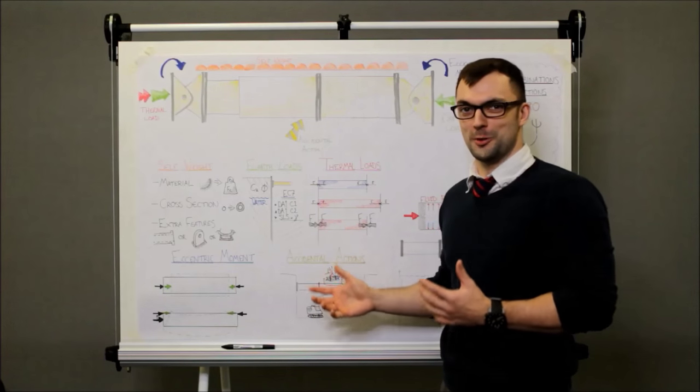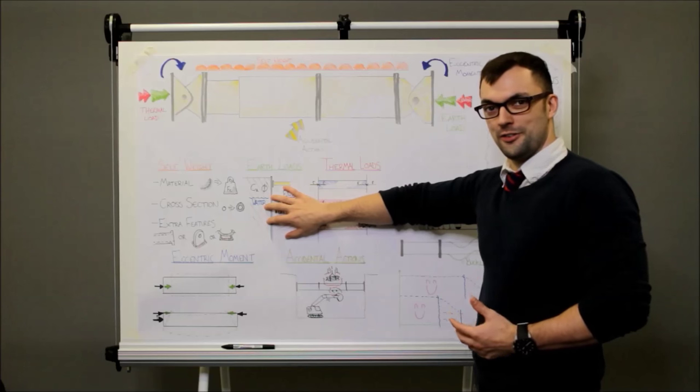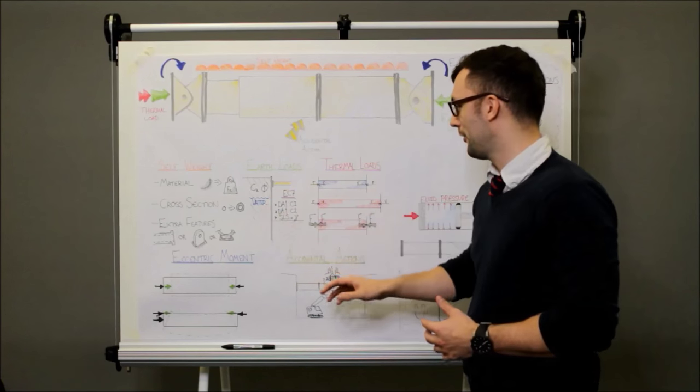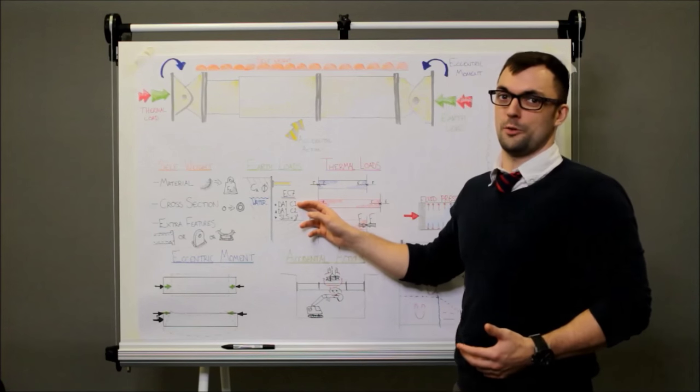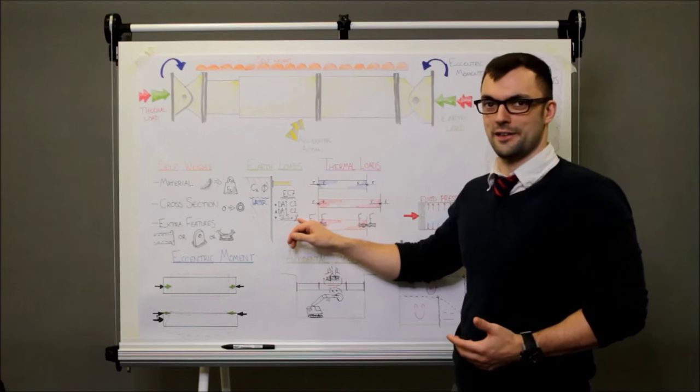Now you can't just throw all these forces at the prop willy-nilly. In Eurocode 7 it gives us combinations that allow us to calculate the earth load. Design Approach 1 is what we use in the UK and this has two combinations and we'll also check the SLS.